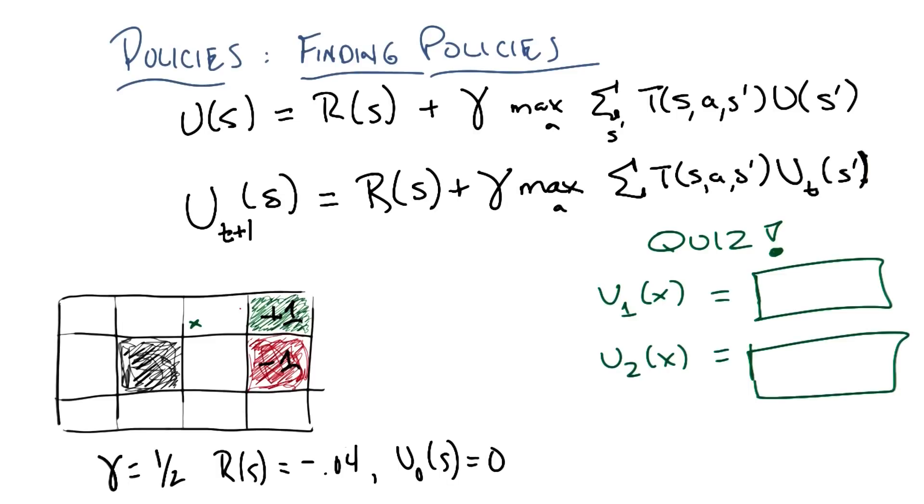And I've written down the grid world we've been playing with the entire time. And I want you to figure out how value iteration would work from the first iteration and the second iteration for this particular state here that I've marked with an x, okay?